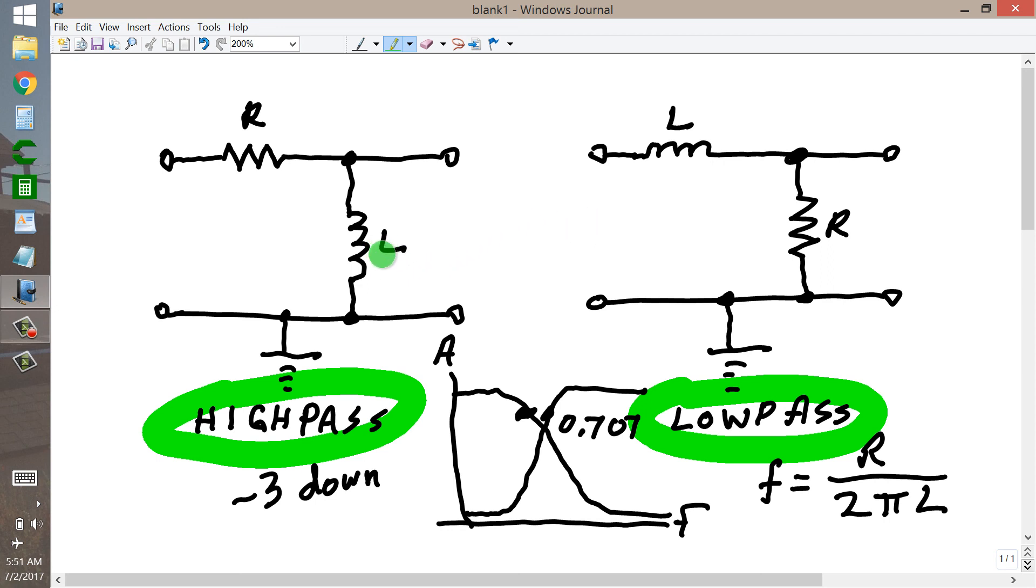Of course, you need to be sure to use enameled or insulated wire when you wind a toroidal inductor or any inductor around a ferromagnetic core of any shape for that matter. So that's the L and the R of all of this.